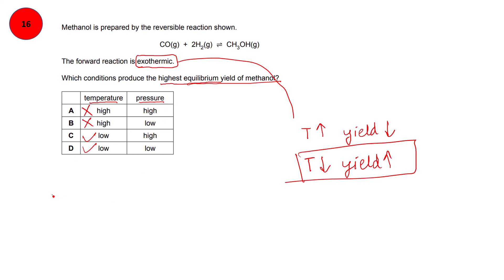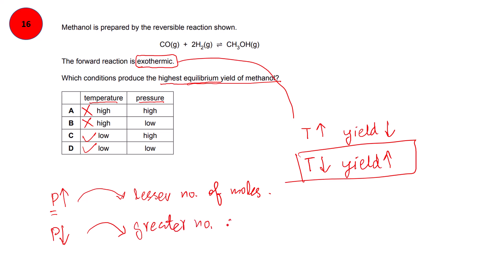Now considering pressure: if you increase pressure, the reaction shifts to the side with fewer moles. If pressure is decreased, the reaction shifts to the side with greater moles. Looking at the equation, on the methanol side there is one mole, while on the reactants side there are two moles of hydrogen and one mole of carbon monoxide — three moles total. To shift the reaction toward methanol, high pressure is needed, since this shifts to the side with fewer moles.